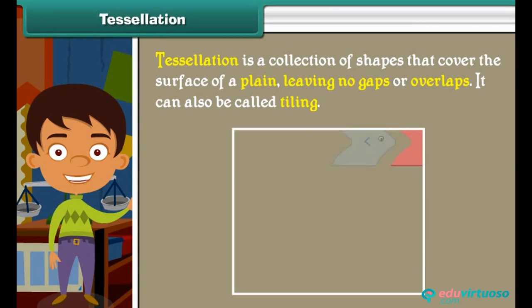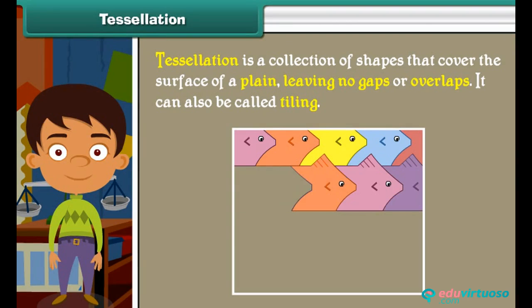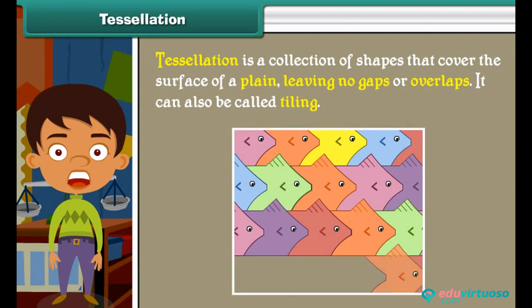Tessellation. Tessellation is a collection of shapes that cover the surface of a plane, leaving no gaps or overlaps. It can also be called tiling.